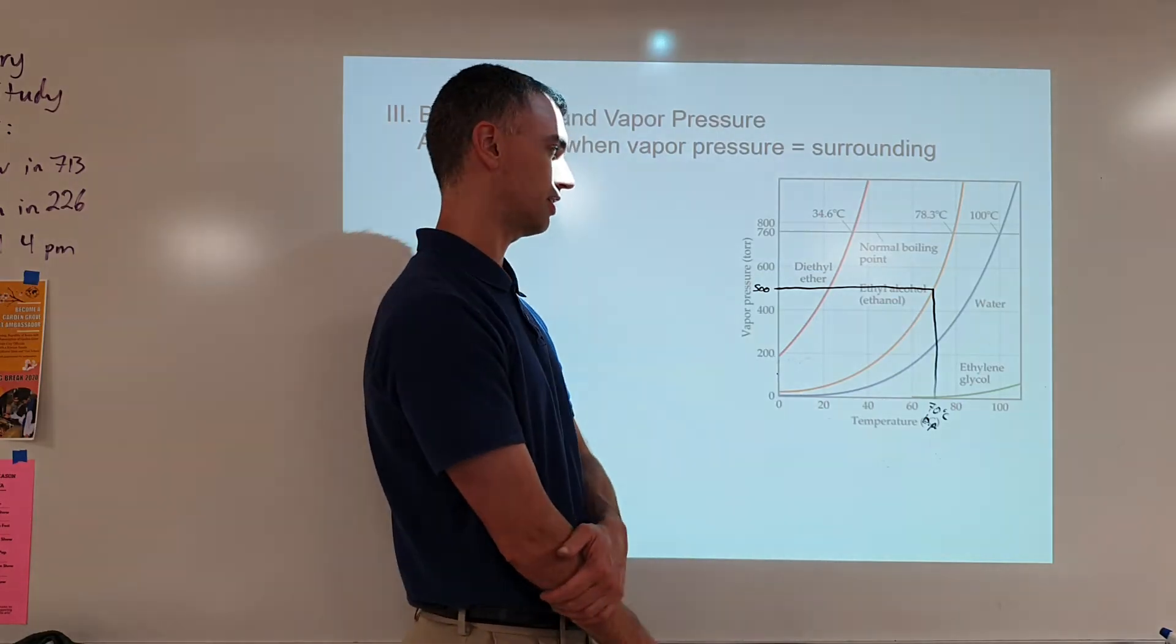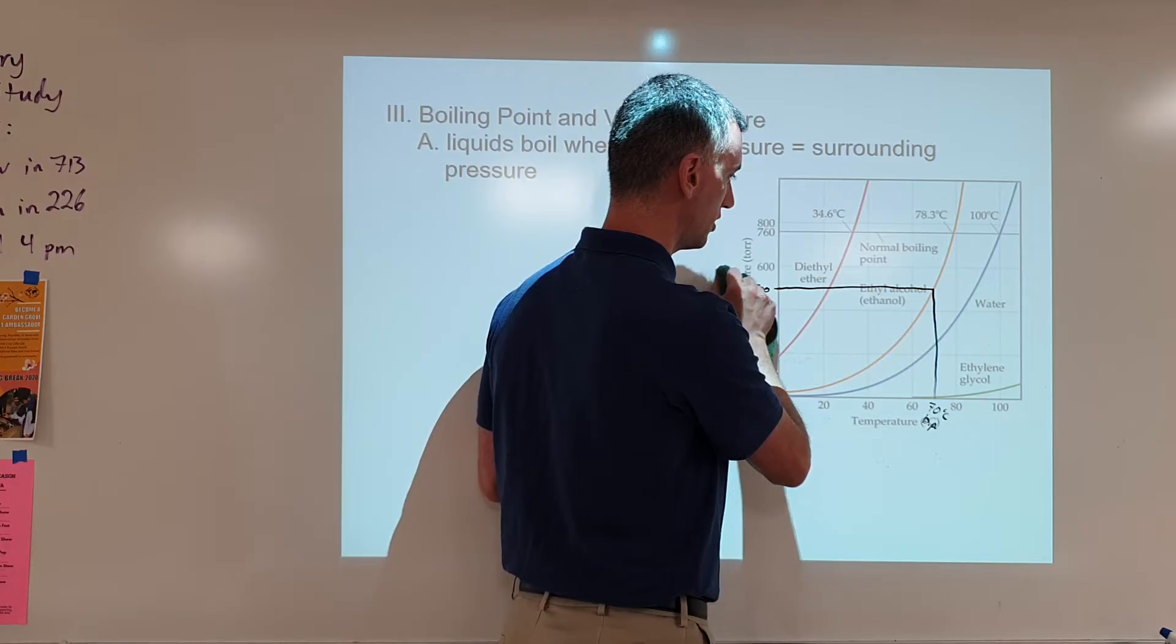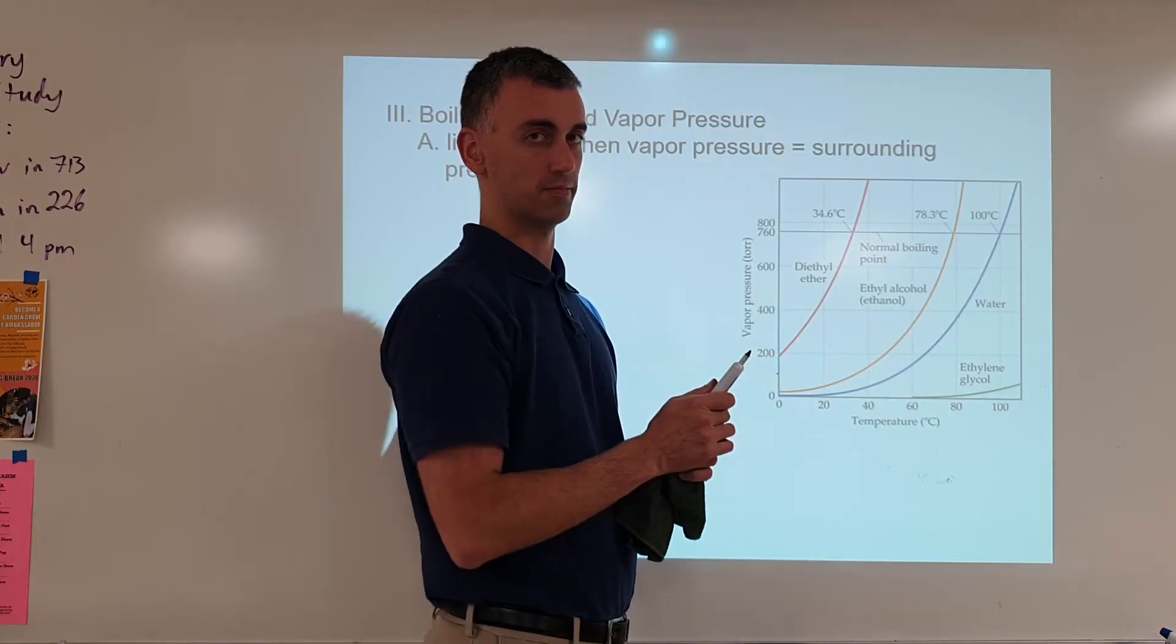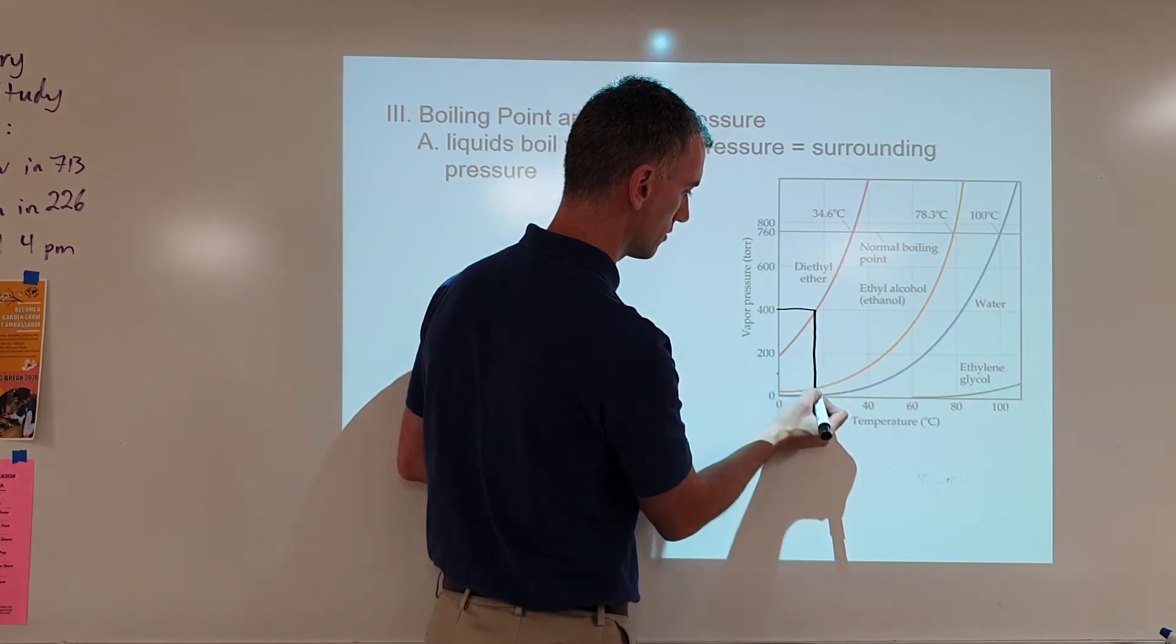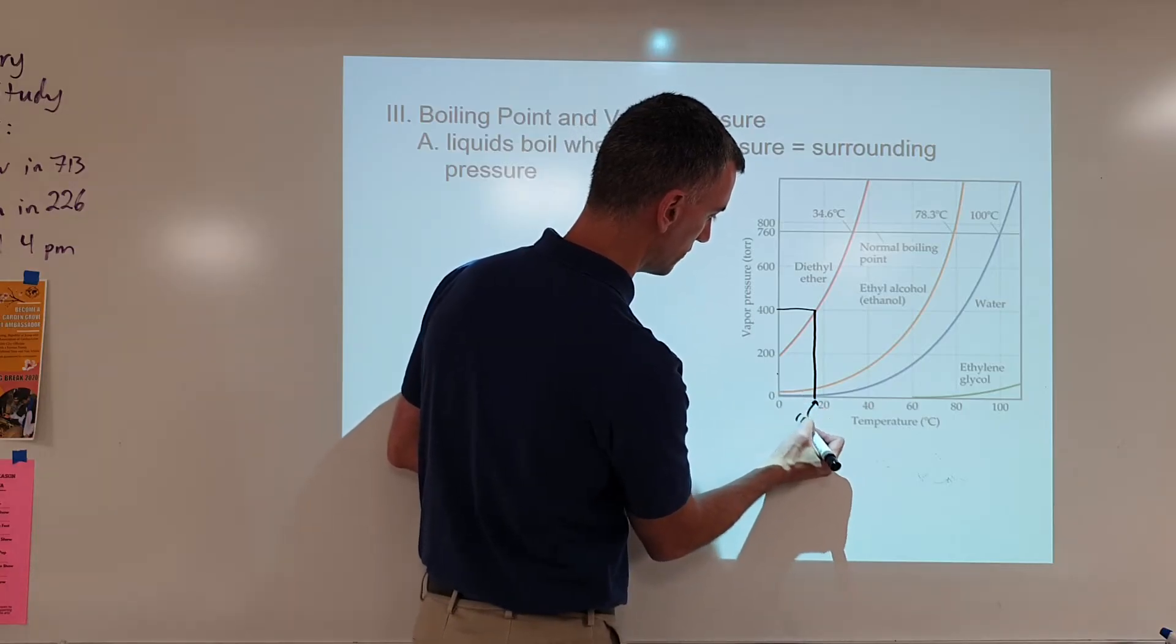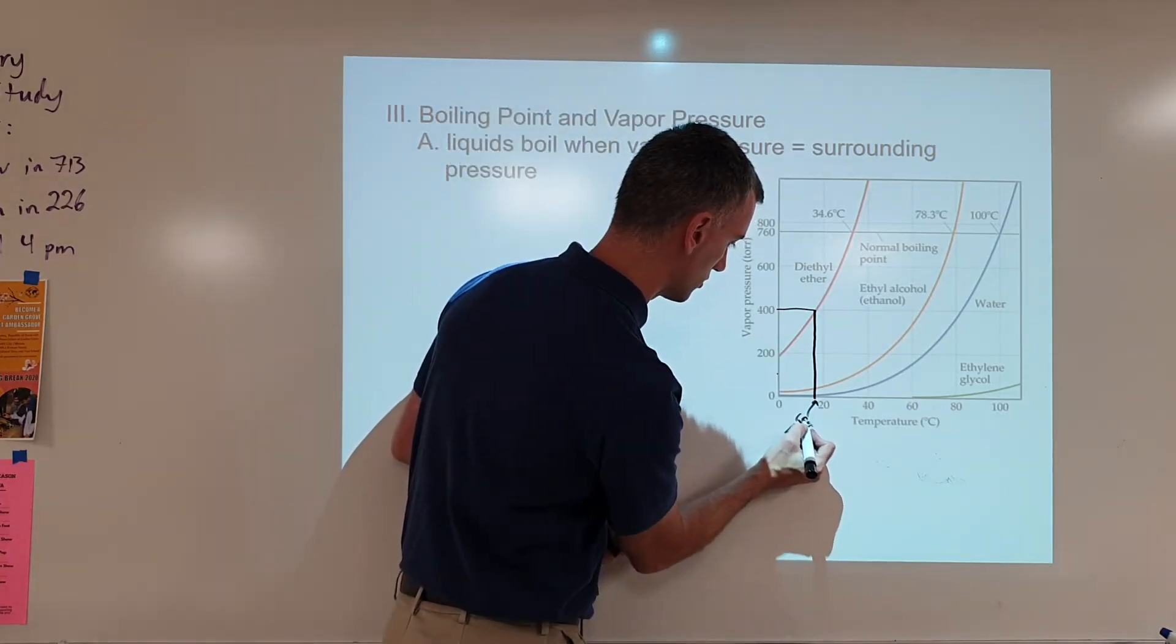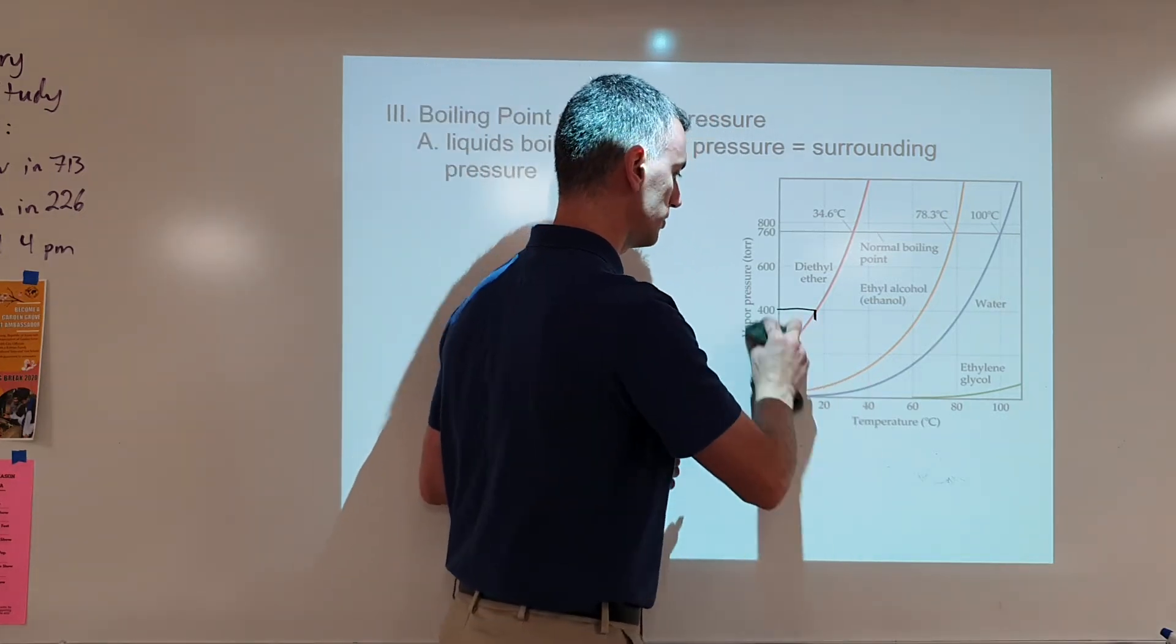That's how you go about calculating it. So, based on that, you should be able to try, say, maybe one for diethyl ether. So, find the boiling point of this stuff at 400 torr. The answer to how you do that is find 400 torr, trace it over, trace it down. This is 20, this is 0, so 10 would be about right here. So, estimate about 15 degrees Celsius boiling point. Approximately 15 degrees Celsius. Okay, so that's one way of doing things with this graph.